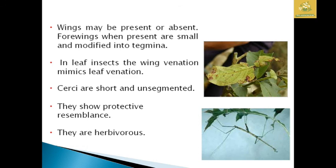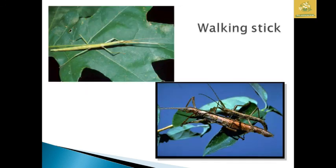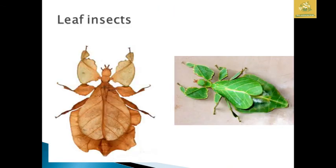Wings may be present or absent depending on the environment. Forewings are present, small, and modified into tegmina. In leaf insects the wing venation mimics leaf venation. The cerci are short and unsegmented. They show protective resemblance in their environment. They are mainly herbivorous. I have given pictures of the walking stick insect and leaf insects where you cannot tell them apart from their leaf environment.